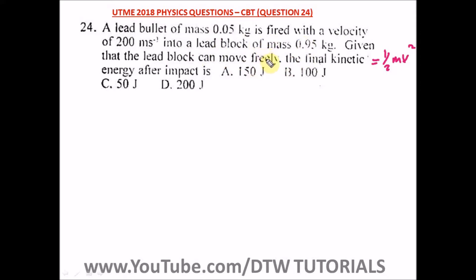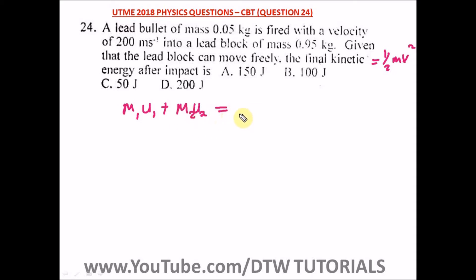This question relates to the law of conservation of momentum, which states that if two or more bodies collide in a closed system — a system where no external force is acting — the total momentum before collision is equal to the total momentum after collision. That is: m1×u1 + m2×u2 = m1×v1 + m2×v2.